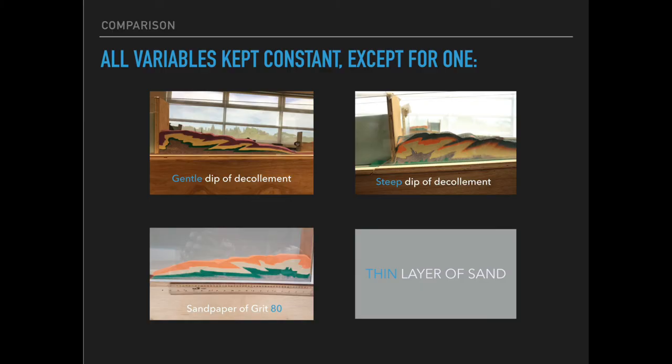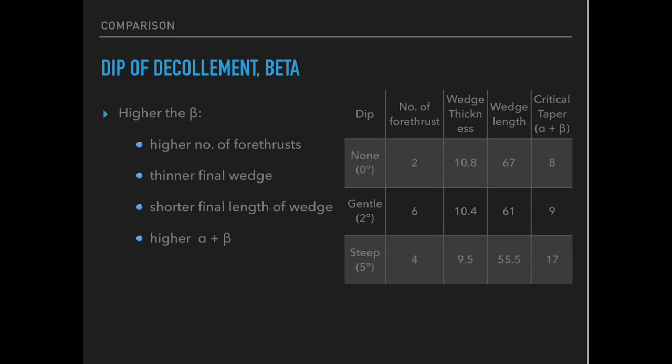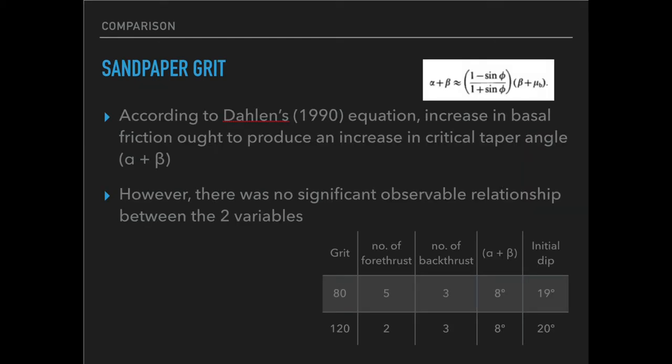Time to compare some results! Here are the diagrams of sandboxes whose results we will be comparing against — these sandboxes have one differing variable from ours. With a thinner layer of sand, there are a higher number of forethrusts, a lower number of back thrusts, a greater critical taper angle, and a lower length of the final wedge. With a steeper dip of décollement, several characteristics were identified including a higher number of forethrusts, a thinner and shorter final wedge, and a higher critical taper angle.